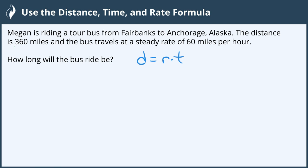The first thing given is that Megan is traveling a distance of 360 miles. So we can replace distance in our formula with 360. So we have 360 equals, and we also know that it is traveling at a rate of 60 miles per hour. So we can replace rate with 60.